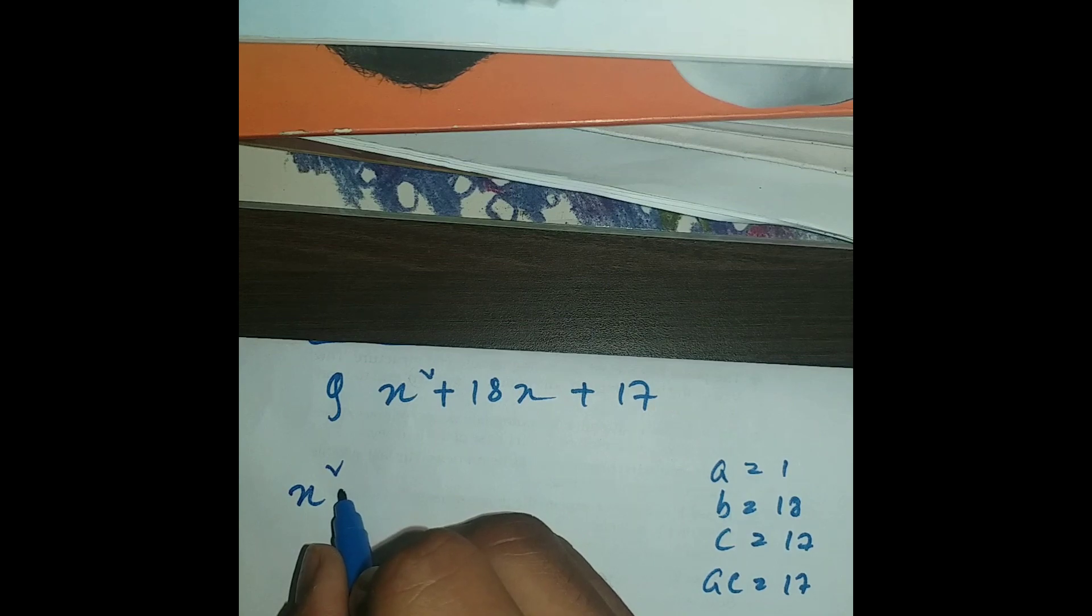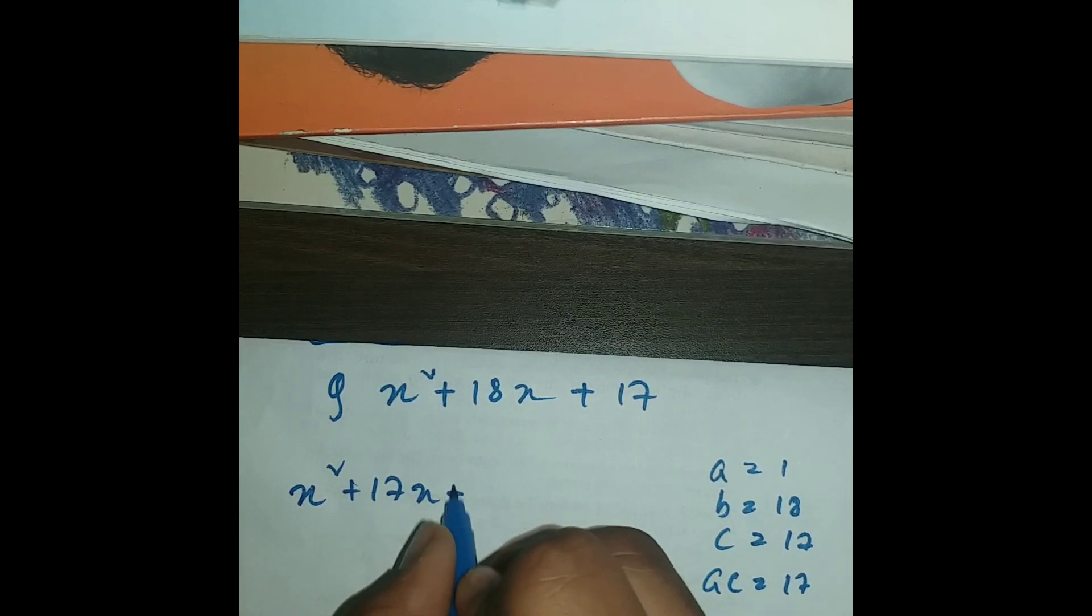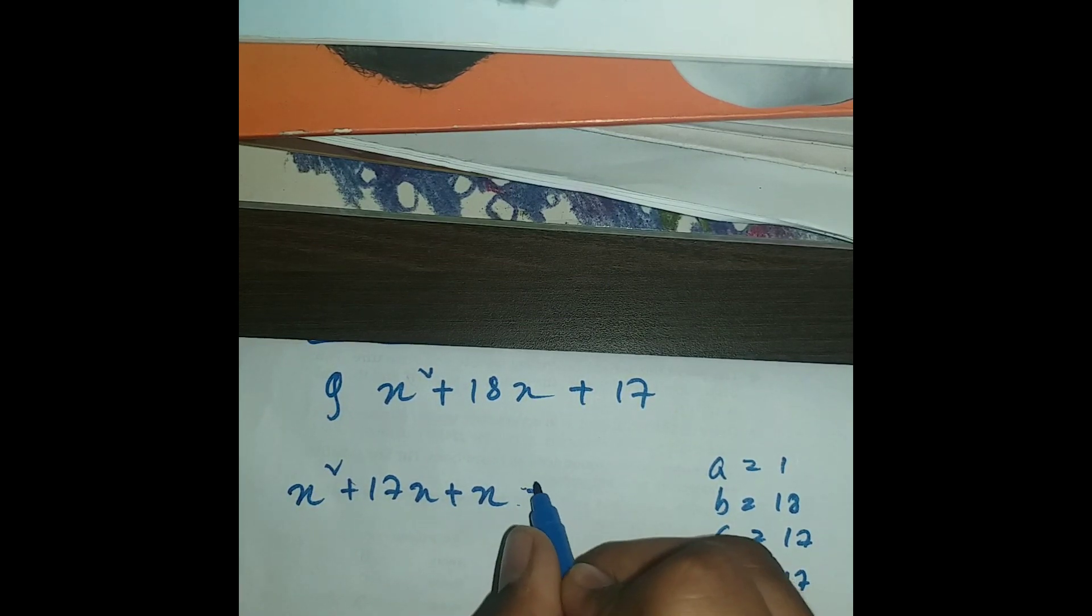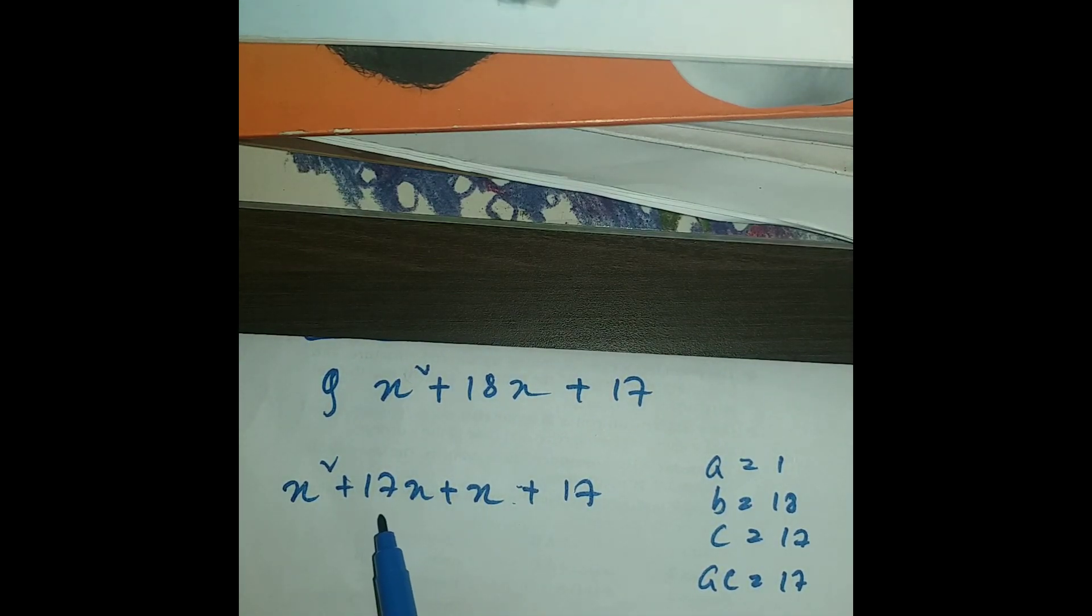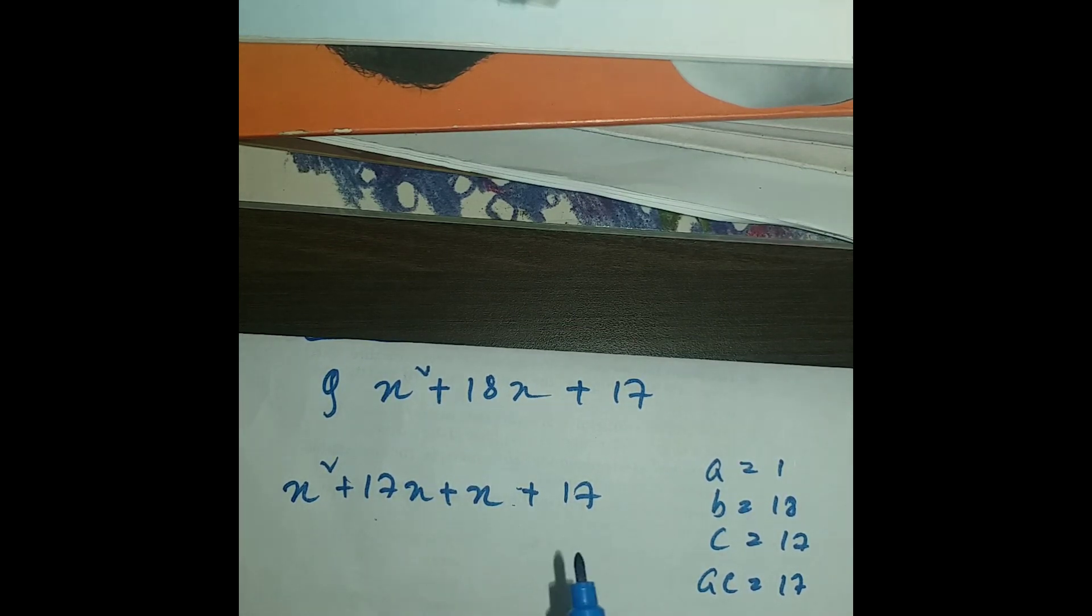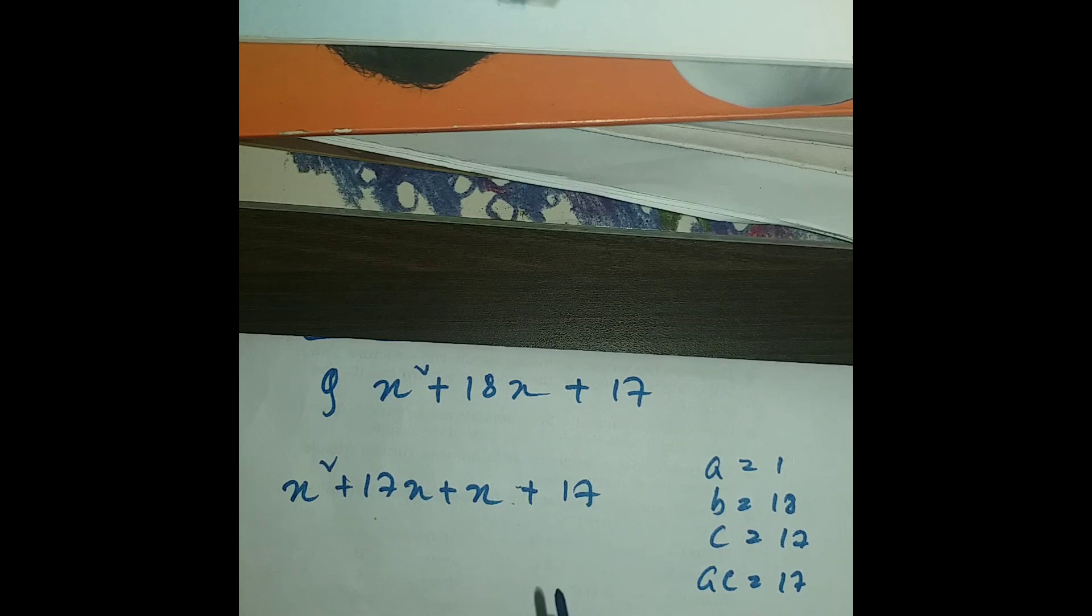So it's very simple. x² + 17x + x + 17. So we can see that 17 into 1 which is 17, and 17 plus 1 which is 18.